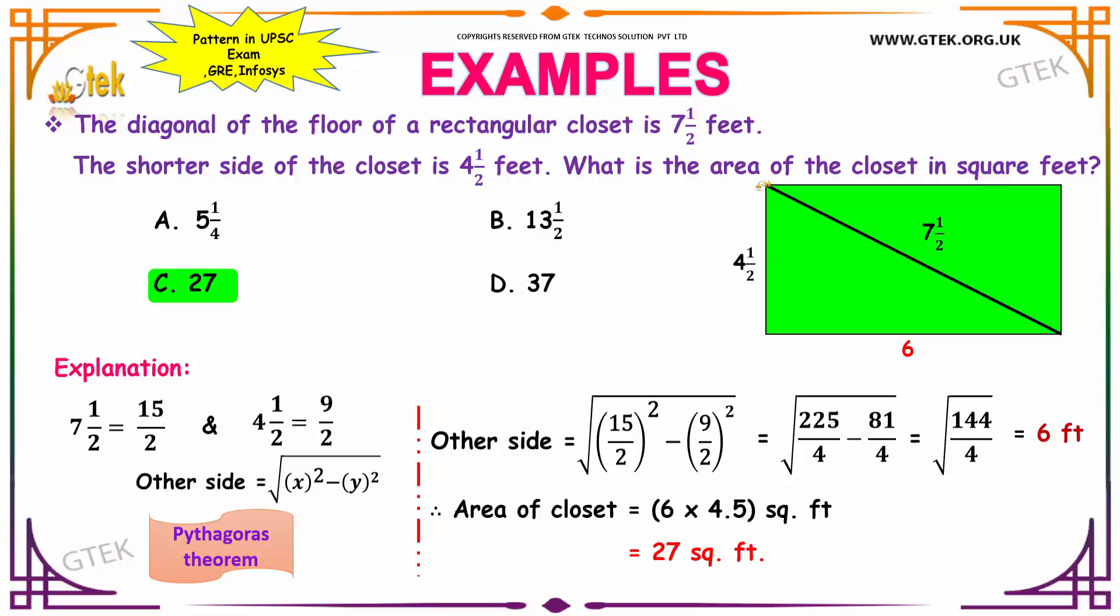If you see, we have a triangle over here. So, using Pythagoras theorem, you can find the unknown side. That is, the unknown side is equal to square root of x square minus y square. That is, your hypotenuse square minus your breadth square.